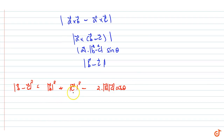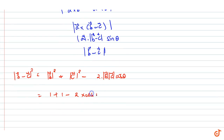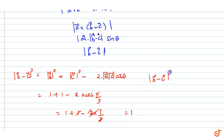Substituting the values: |b - c|² = 1 + 1 - 2·(1/2) = 2 - 1 = 1. Therefore |b - c|² = 1, which gives us |b - c| = 1. This is our final answer.